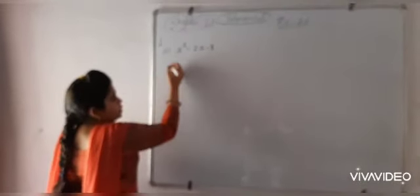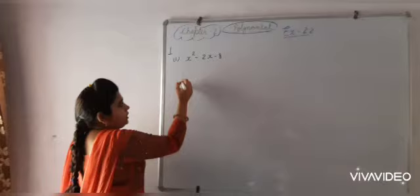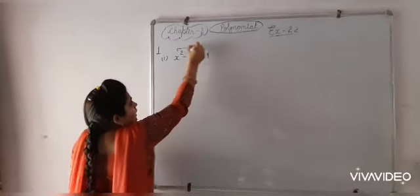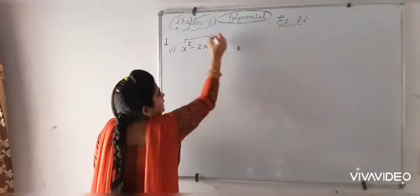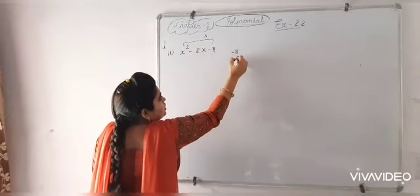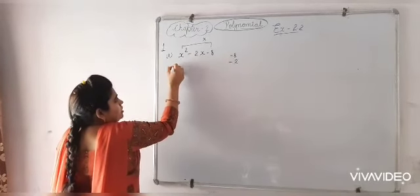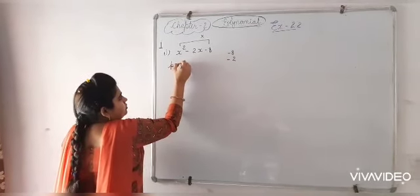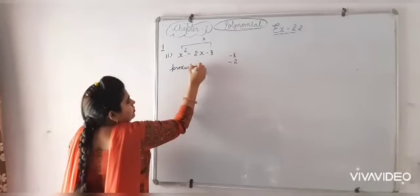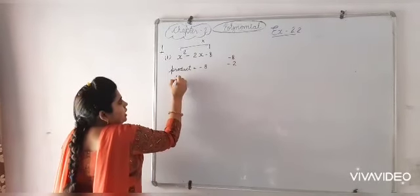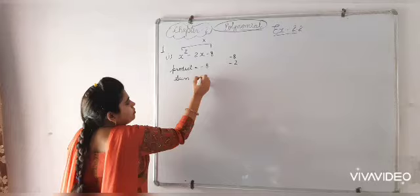For finding its zeros, we will use middle term splitting method. Here, minus 8 is the product and minus 2 is the sum. Means product is minus 8 and sum of zeros is minus 2.